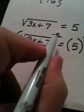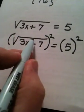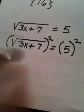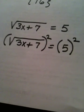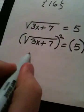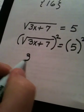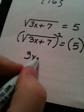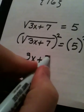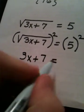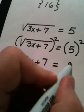On this side, the squaring and the square rooting are inverse operations, so they cancel each other out. In English, they disappear. So, all I'm left with is 3x plus 7 with no roof on it. 5 squared is 25.